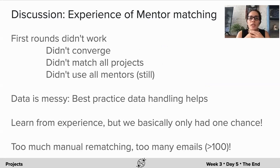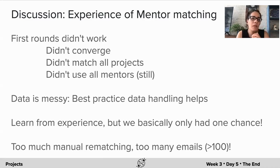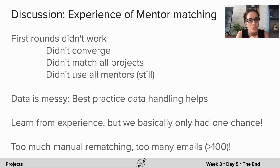What were the problems we encountered? The first couple of iterations of the algorithm actually didn't converge, so we had to run them again. When we got the matches and sent out the emails, we realized some of the matches were wrong — mentors had maybe mistakenly entered wrong time slots. So we needed to do some matches manually.